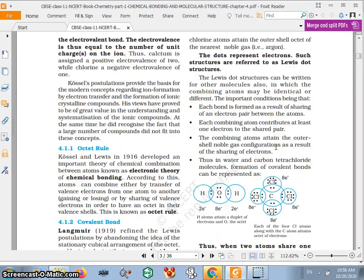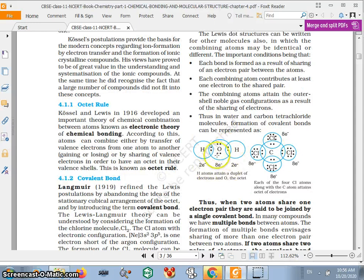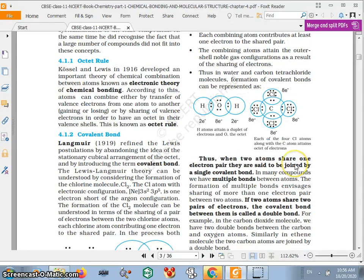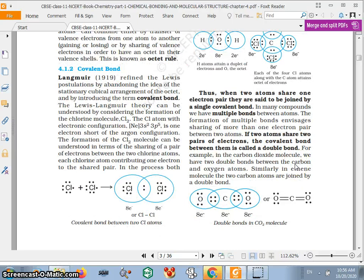The dot represents electrons. Such structures are referred to as Lewis dot structures. You can see here the formation of carbon, nitrogen, chloride. So when two atoms share one electron pair, they are said to be joined by a single covalent bond.